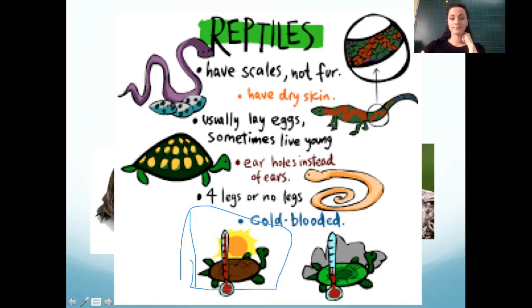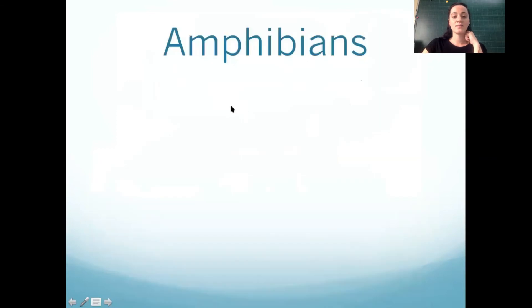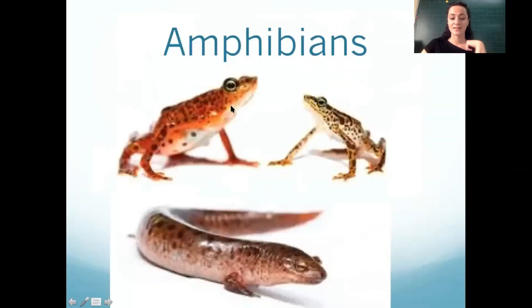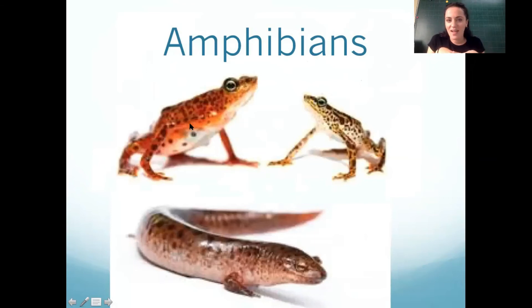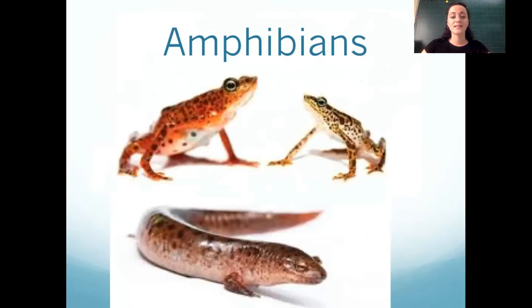The next one we learned today was amphibians. They look slimy — they have moist skin. Moist means wet. They have wet skin and it's smooth, it's not bumpy.